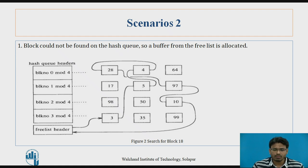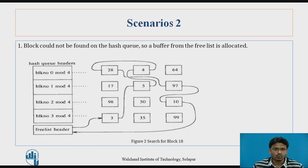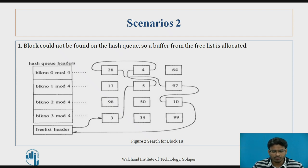We are searching for block 18, so computing 18 mod 4 gives a remainder of 2. We then search for that block in the queue at block number 2. Looking at block number 2, we find buffers 98, 50, and 10 in the buffer pool, but block 18 is not there. This means the block could not be found on the hash queue, so we need to allocate a buffer from the free list.